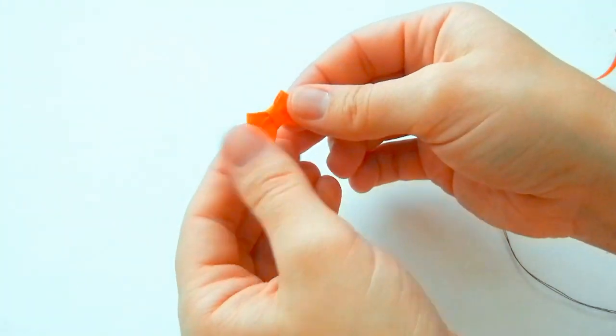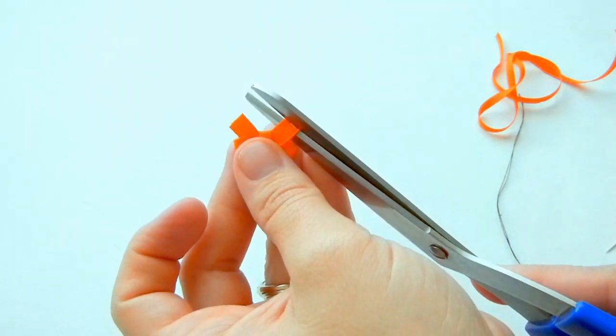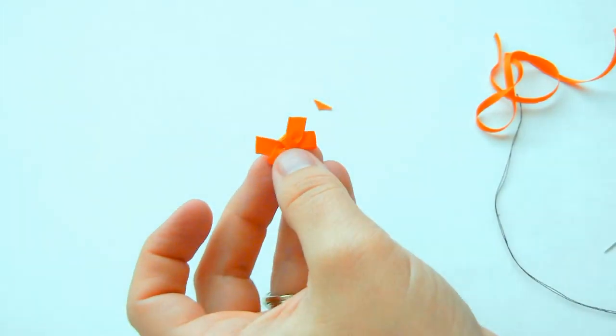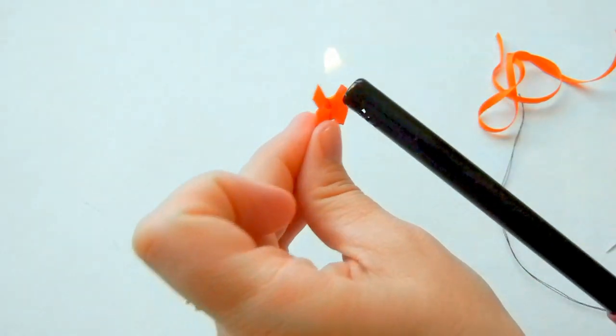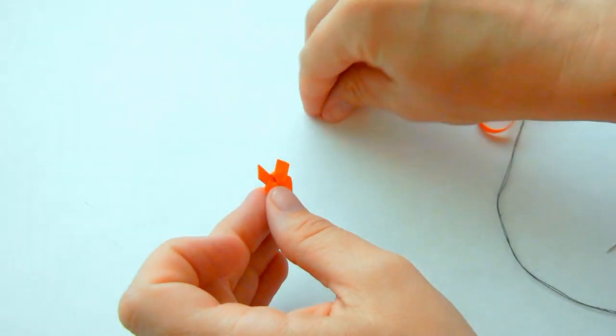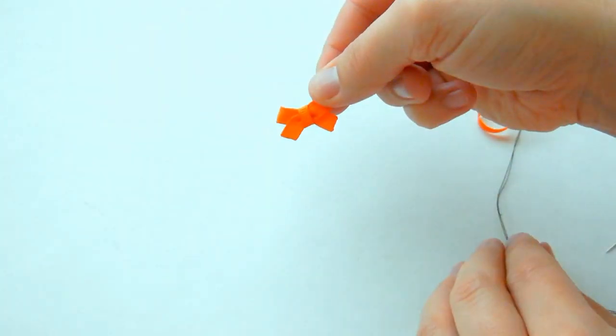Then I just got to even up these tails and seal them. And that finishes our little bow that's going to go on the spider.